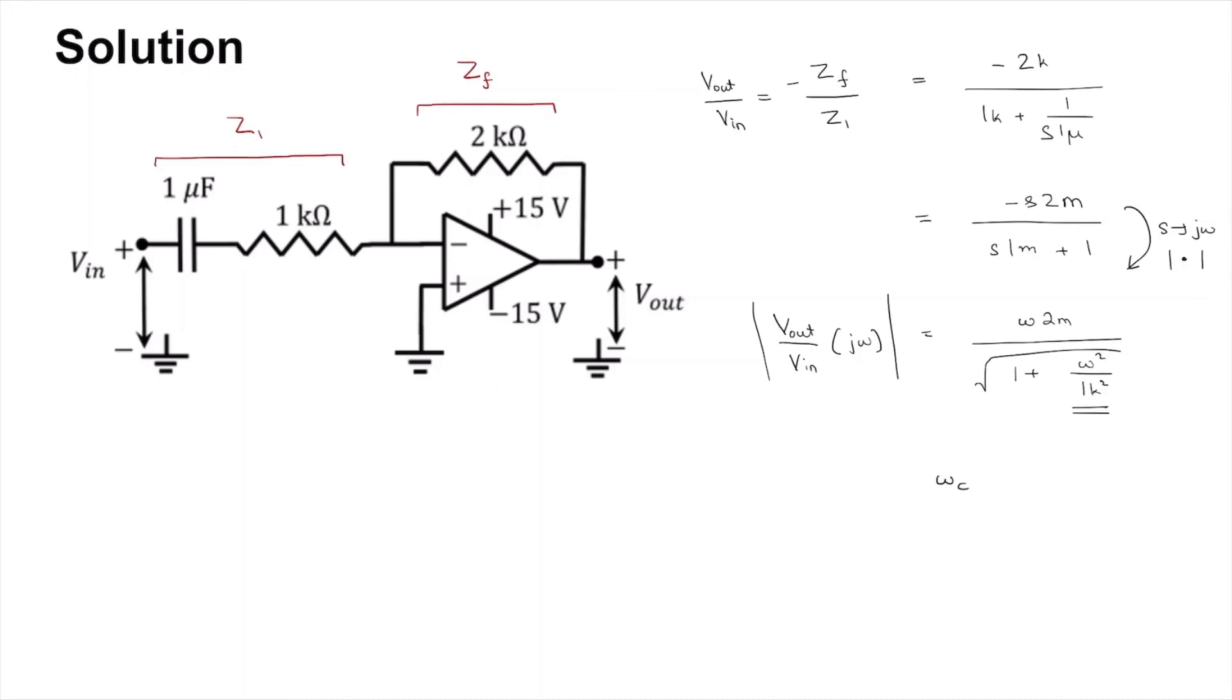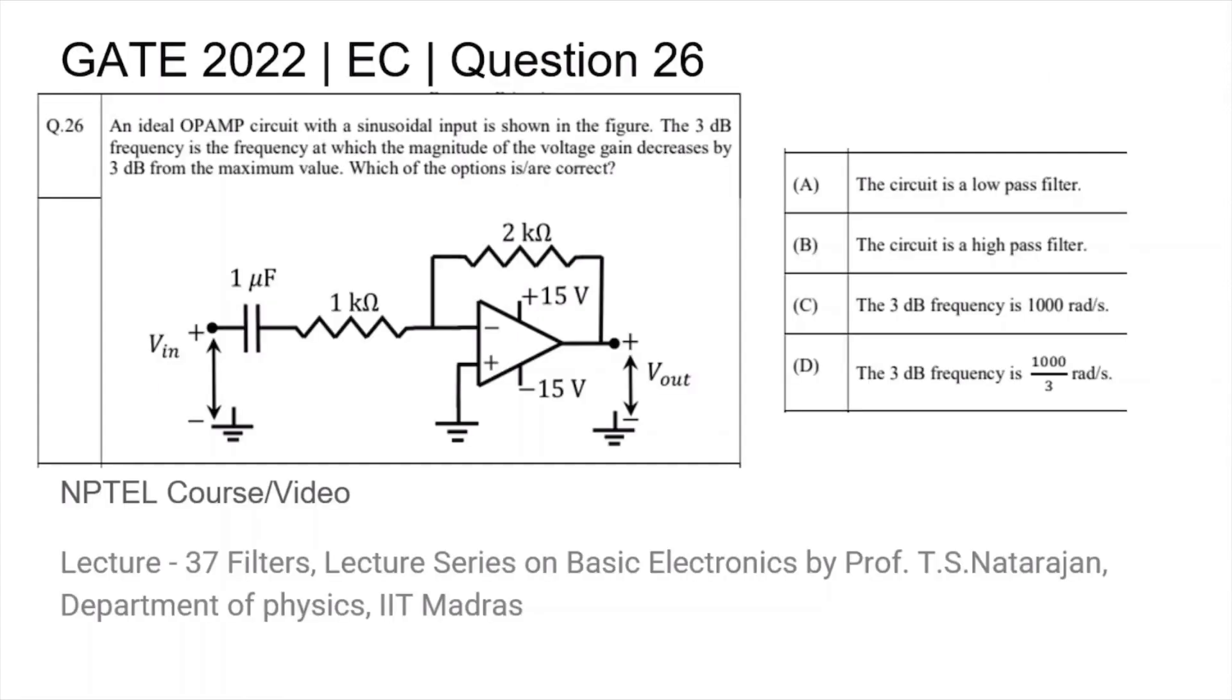The cutoff omega_c is equal to 1 kilo radians per second. So the options that are correct are: it's a high-pass filter, and the 3 dB frequency is 1000 radians per second.